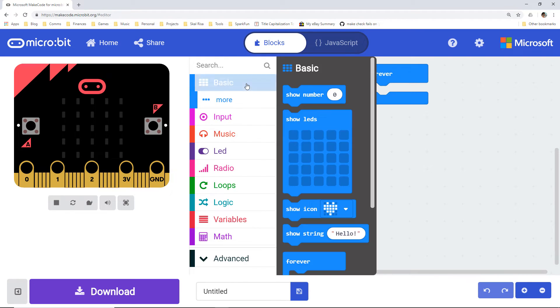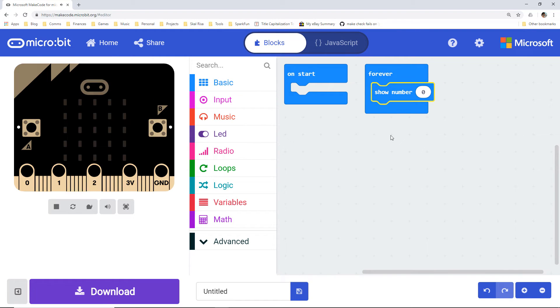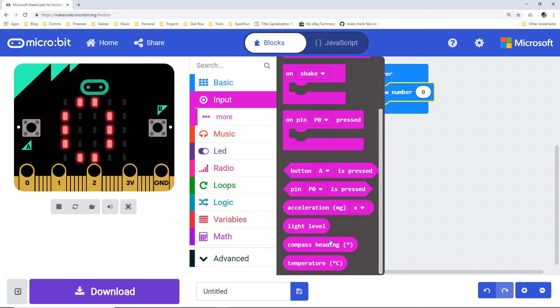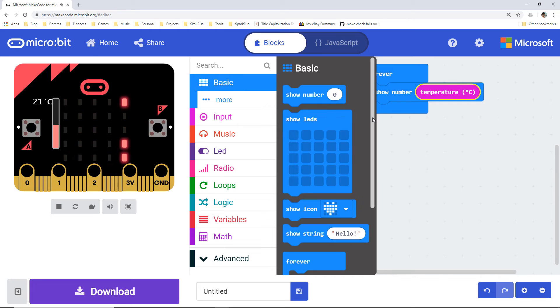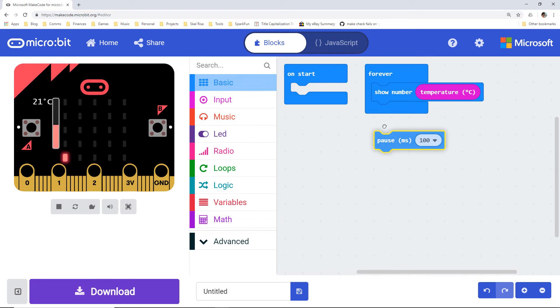In MakeCode, drag a show number block from basic and snap it inside the forever block. From input, drag a temperature block and snap it inside the show number block. From basic again, get a pause block and snap it under the show number block. Change the delay to 500 milliseconds. We want to make sure that there is a slight delay between scrolling numbers on our screen so we can tell them apart.